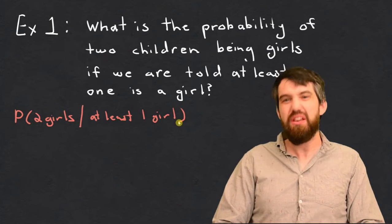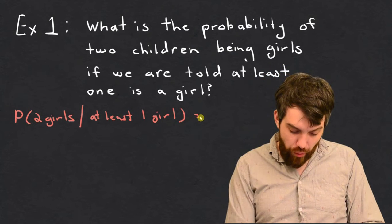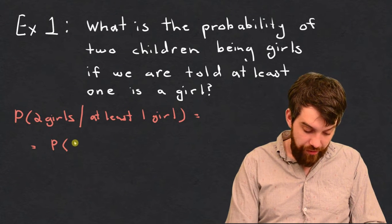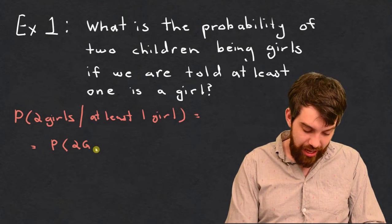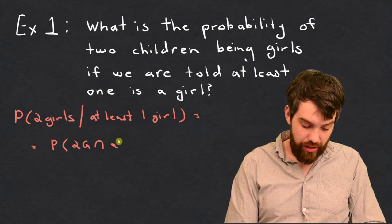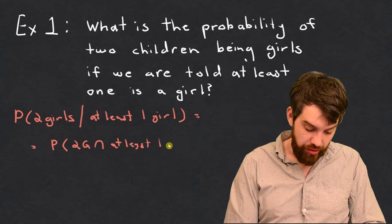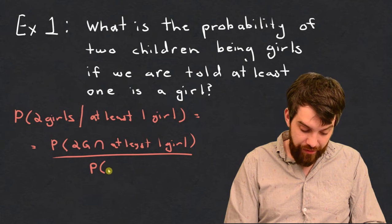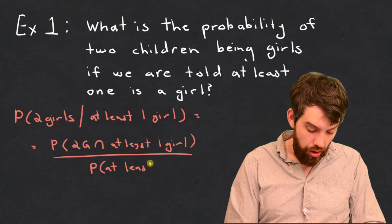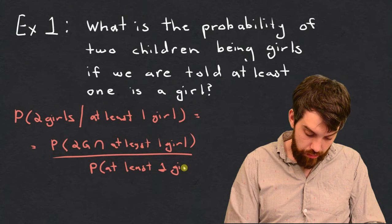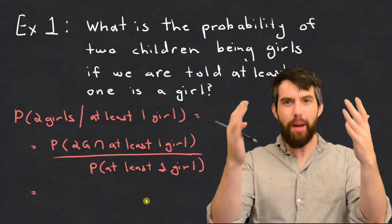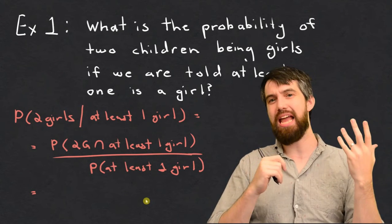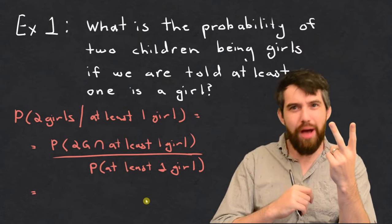This is a probability of A given B. Therefore, our formula is going to be equal to the probability of two girls and at least one girl — that is, the intersection of the two different claims — all divided by the probability of at least one girl. So we have a top to compute and a bottom to compute. Let's look at the top.